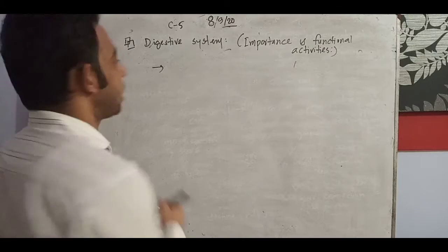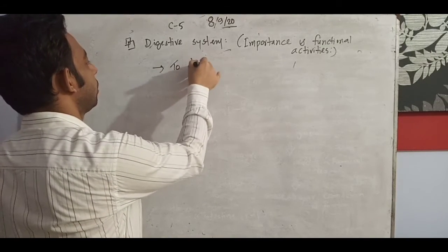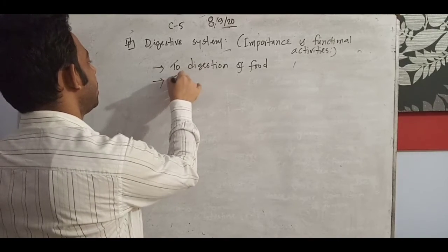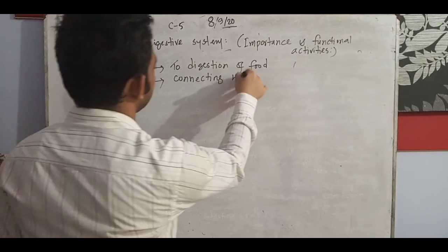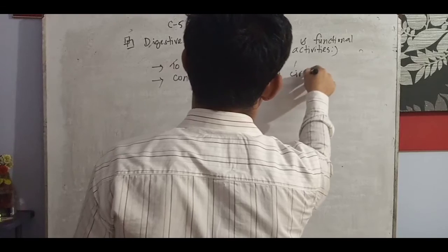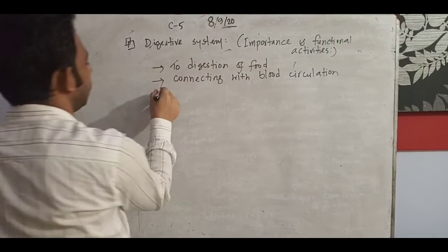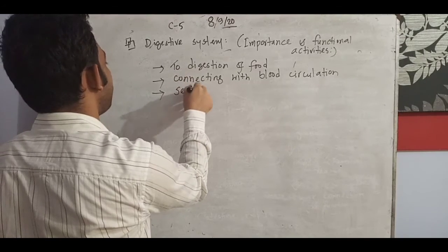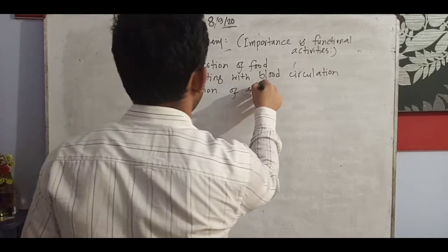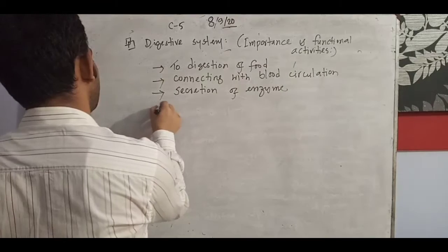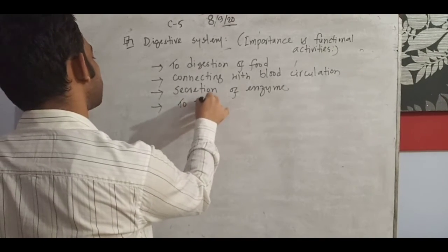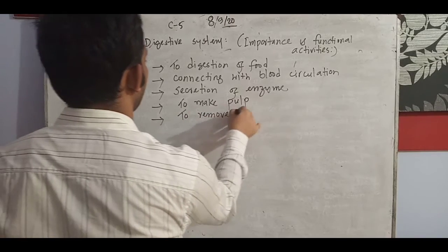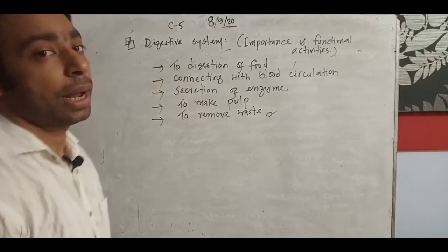The importance and functional activities of the digestive system include: first, digestion of food; second, connecting with blood circulation; third, secretion of enzymes; fourth, making pulp; and fifth, removal of waste products. I have written these five importance points and you will also write more on your own.